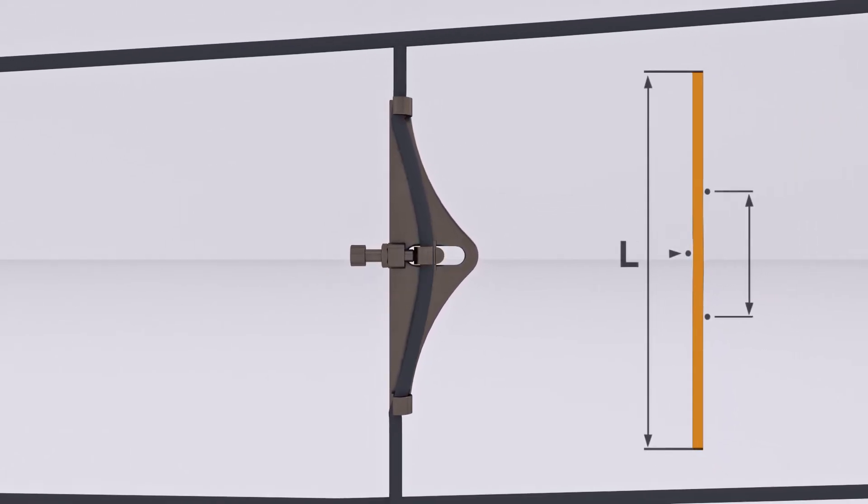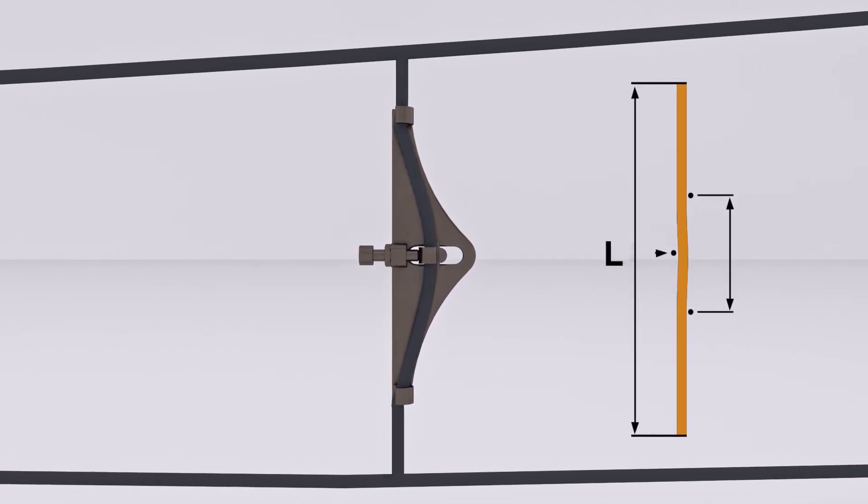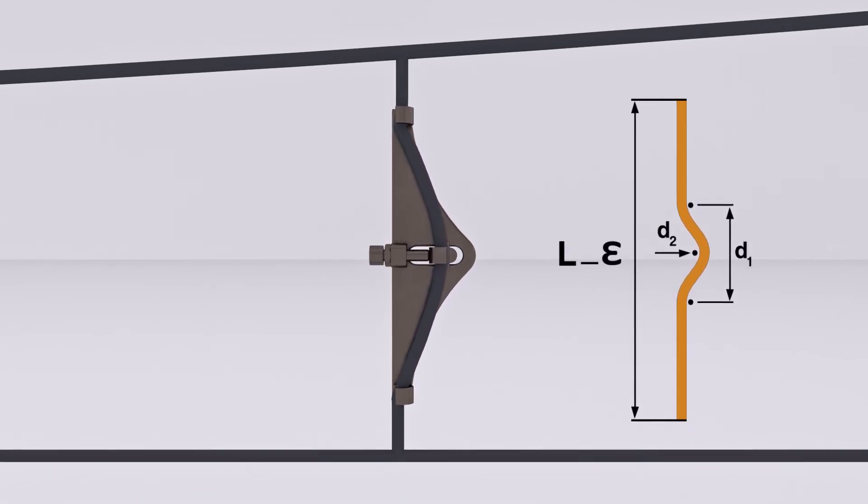Changing each dropper's length is done by passing its cable through three non-linear points. Optimized lengths of droppers can be achieved by adjusting the eccentricity of the points.